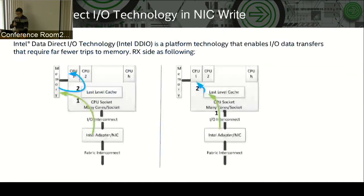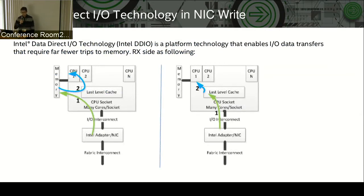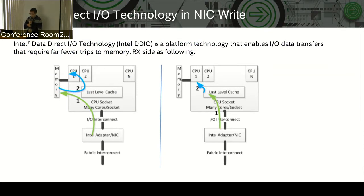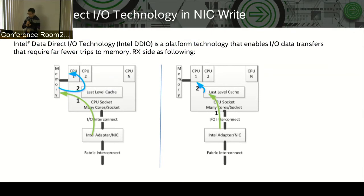DDIO, Intel Data-Direct-IO technology, is very familiar for all of us. It includes two operations. When OVS is receiving packets from NIC, it can put the packet into last level cache instead of memory, which saves cycles when we do memory copy. One operation is write-update, which means when the memory is already in cache, the NIC can write packets to cache directly. The other is write-allocate, which means when the memory address we want to DMA is not in the cache line, DDIO can do this cache allocation for the DMA write.